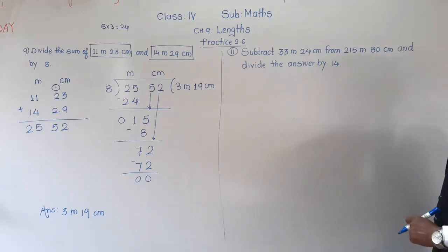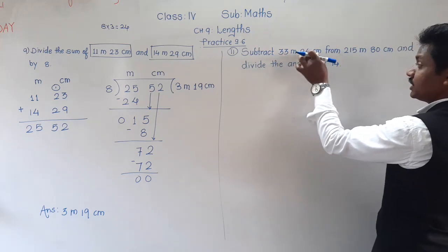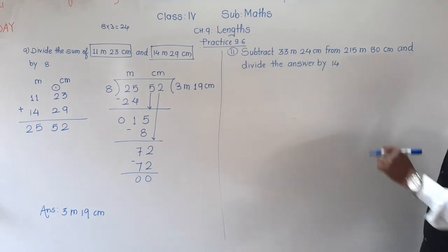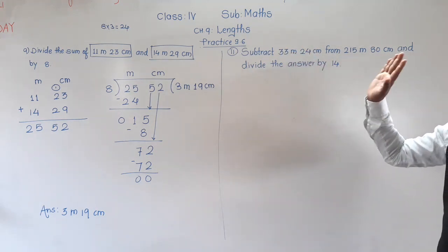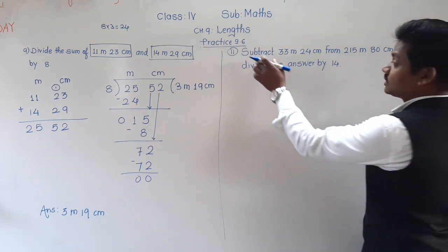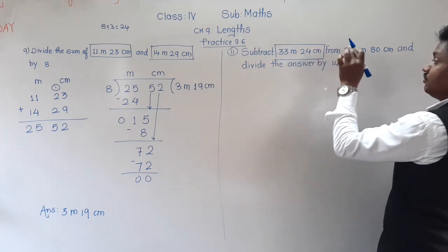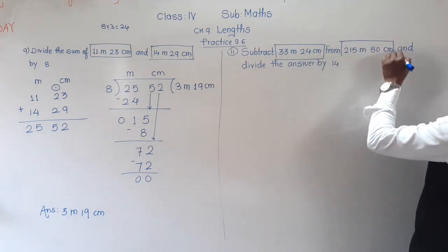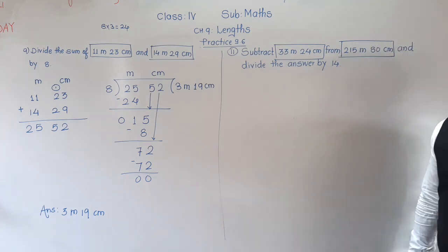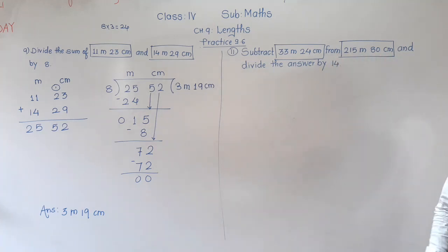Let us solve question number 11. Subtract 33 meter 24 centimeter from 215 meter 80 centimeter, and divide the answer by 14. So we have to subtract these two lengths first, and whatever difference we get in the subtraction, that answer we have to divide by 14.